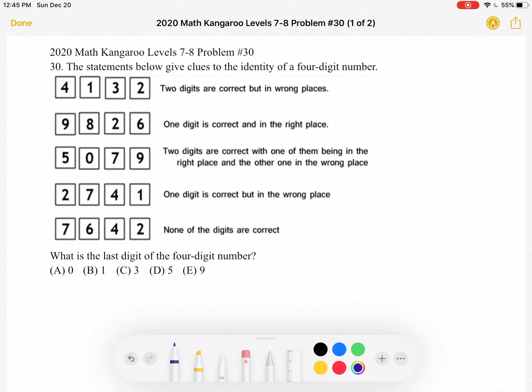This is the 2020 Math Kangaroo Level 7-8 Problem Number 30. The statements below give clues to the identity of a 4-digit number.